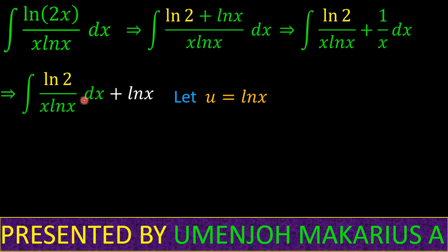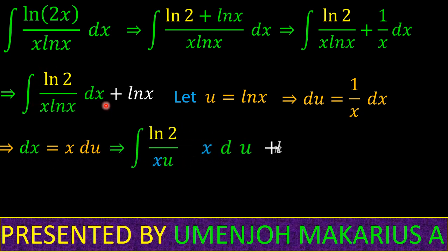over x, and we have an x in the denominator. So let u equal ln x, which means du equals 1 over x dx. Multiplying both sides by x, we have dx equals x du. Our integral now becomes the integral of